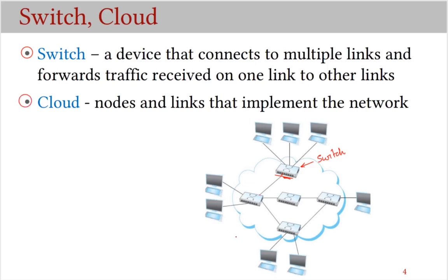The cloud symbol is a shape drawn like a cloud. It refers to nodes and links that implement the network — a cloud that provides network services used by the hosts shown outside the cloud. The cloud symbol is basically a placeholder used to indicate a part of the network where we are not interested in the internal details of that part.